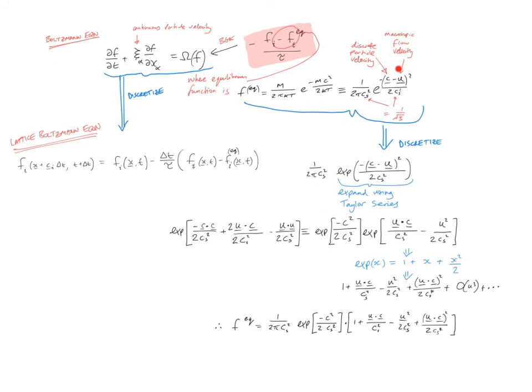Now we discretize the equilibrium function, this term here, which we're going to expand using Taylor series approximation. Taking the term in brackets, c dot u all squared, this is c dot c, two times u dot c, and u dot u. Noting that c dot c equals c squared and u dot u equals u squared. This can be further simplified by noting there are constant values we're taking outside the brackets. And another term here which needs to be expanded using Taylor series approximation.